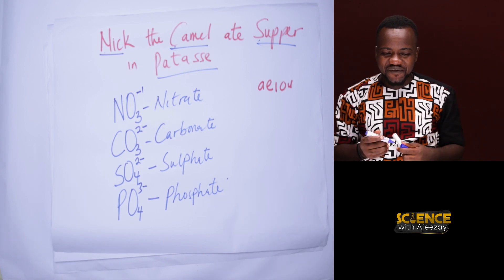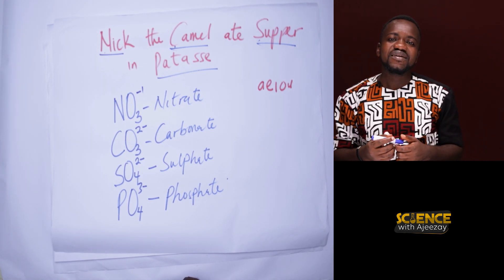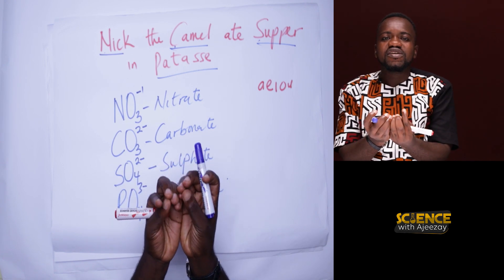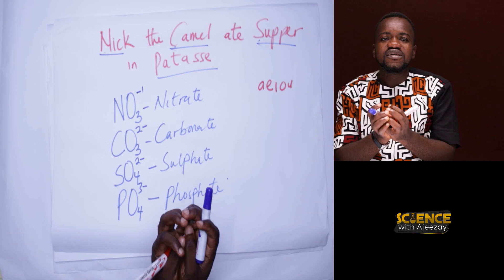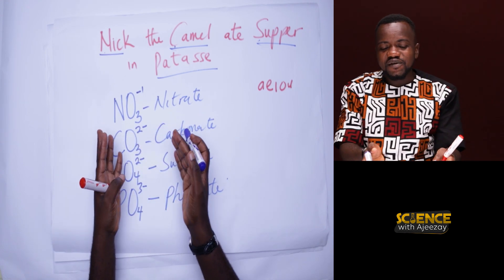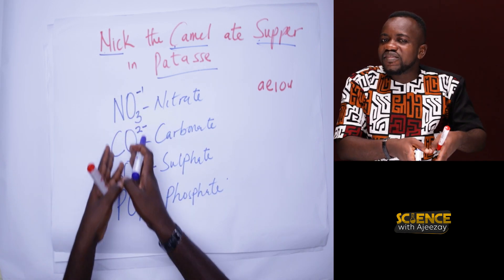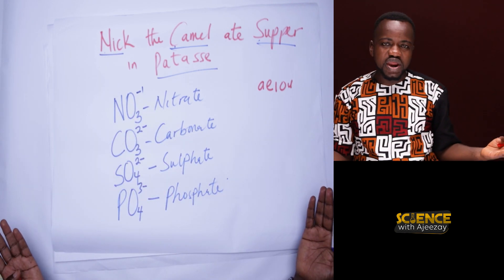This is a very beautiful trick to help you remember the radicals — nitrate, sulfate, phosphate, and carbonate — at your fingertips, because these form the basis of chemical reactions. Once you know how to write these formulas, you are way ahead. It's been another interesting edition of Science with Ajese. Catch you same time next week. Cheers.